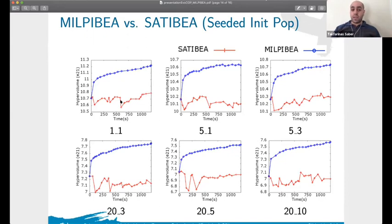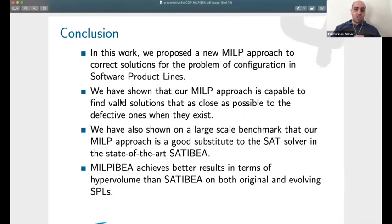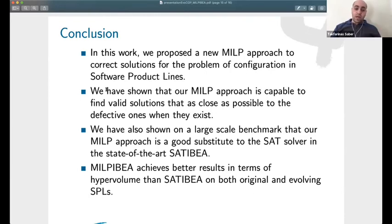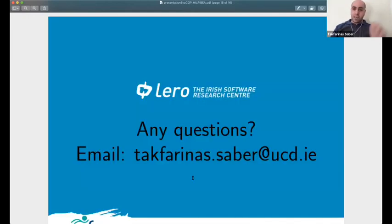In conclusion, we proposed a new MILP approach to correct solutions for the problem of feature selection in software product lines. Our MILP approach finds solutions close to the original infeasible solution in shorter time, and when combined with IBEA it consistently outperforms the SAT-based approach, whether starting from a random or a seeded initial population. Thank you, and feel free to ask questions in the chat or by email.